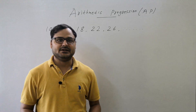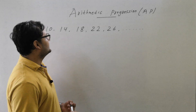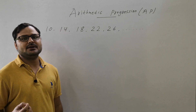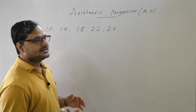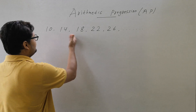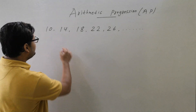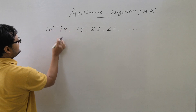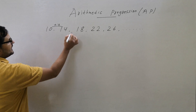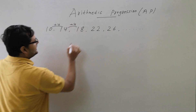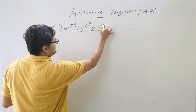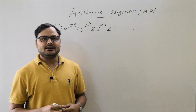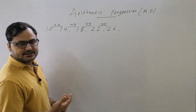Hello, welcome to Prakash Academy. Today our topic is Arithmetic Progression AP, from class 10th CBSE. AP is a sequence or series of numbers where the difference between every consecutive number is equal. For example, if the difference between each consecutive number is plus 4, then that constant difference makes it an AP.